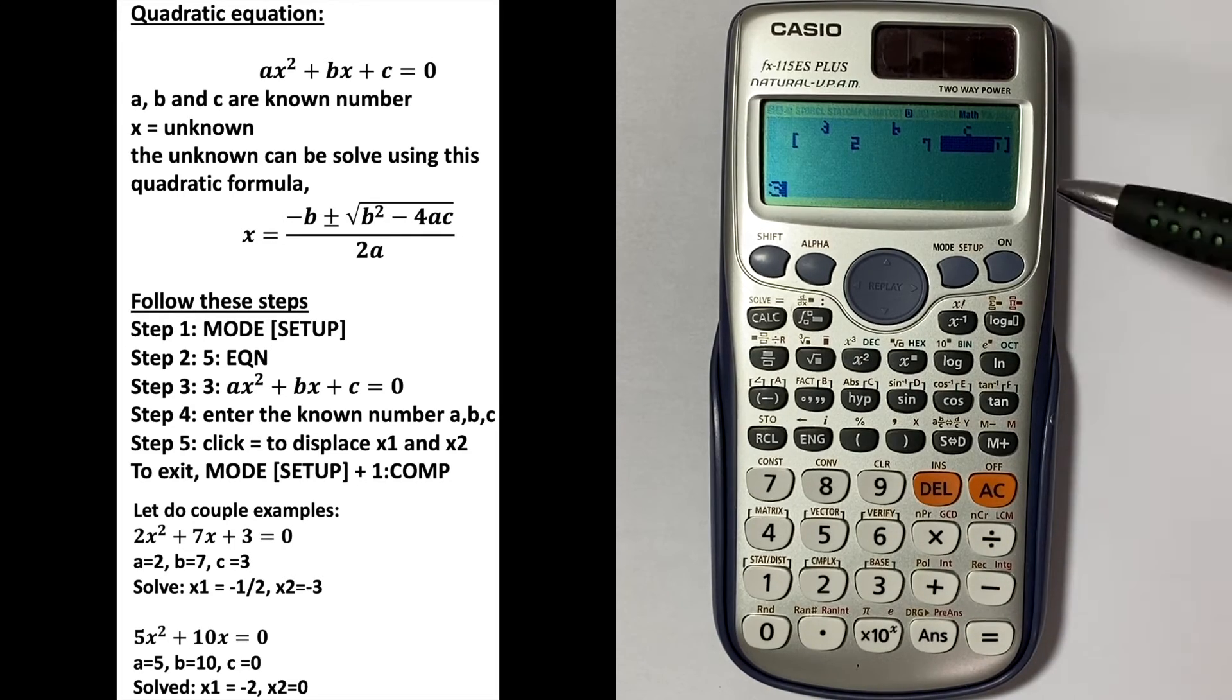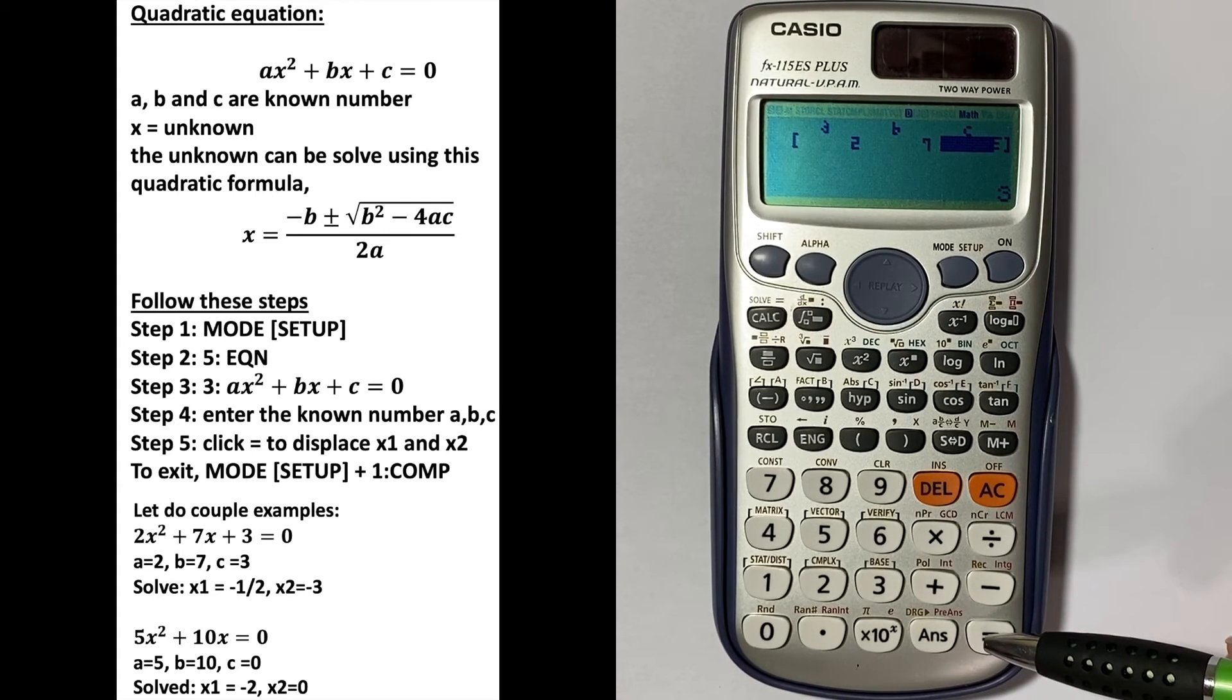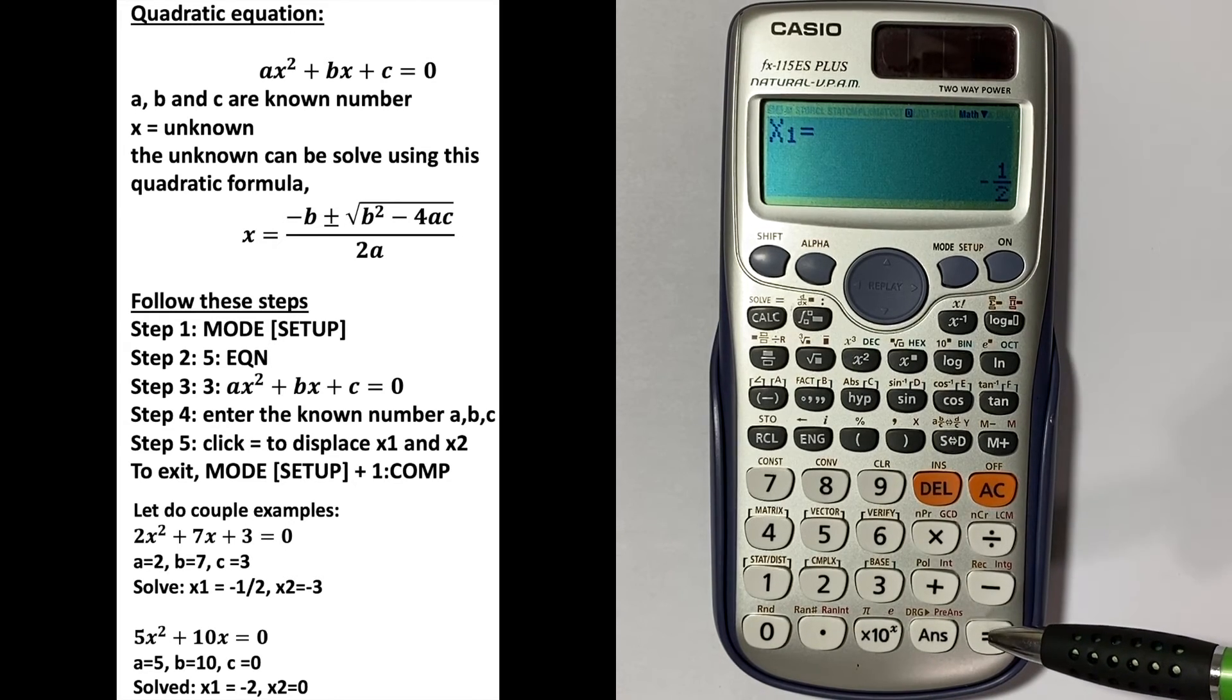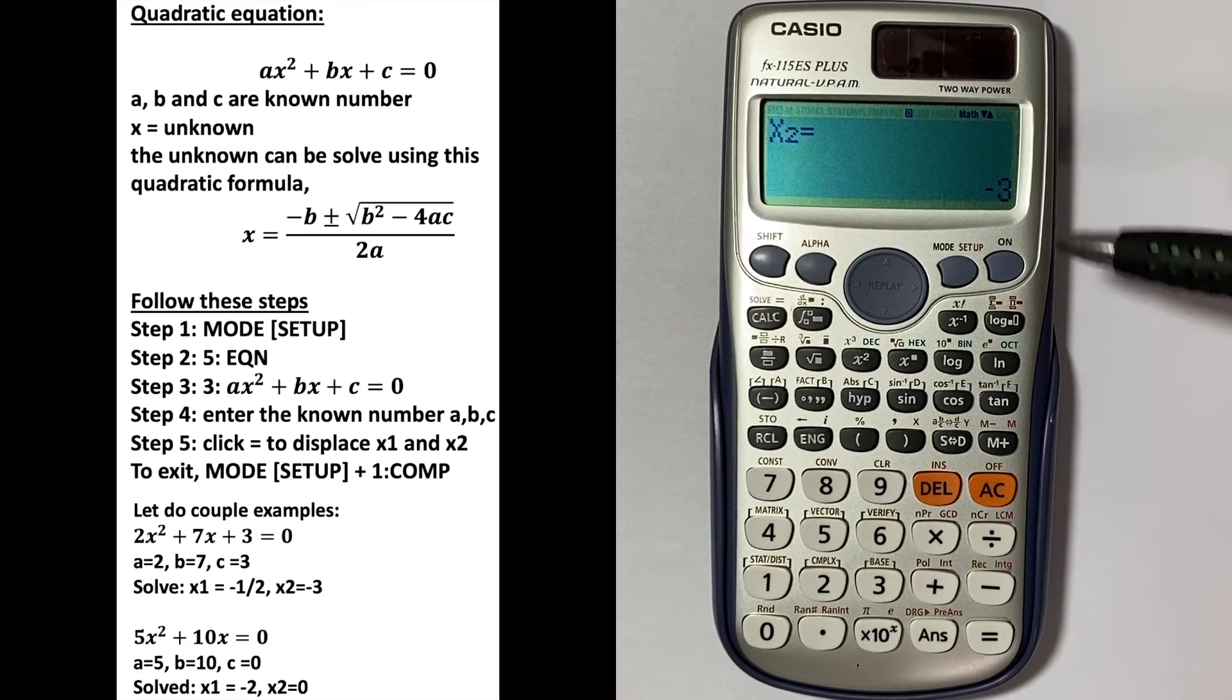So once you have entered all the a, b, c, then you just click enter again or equal. It will solve for x equal to 1 over 2, and then you click again, x2 equals negative 3.